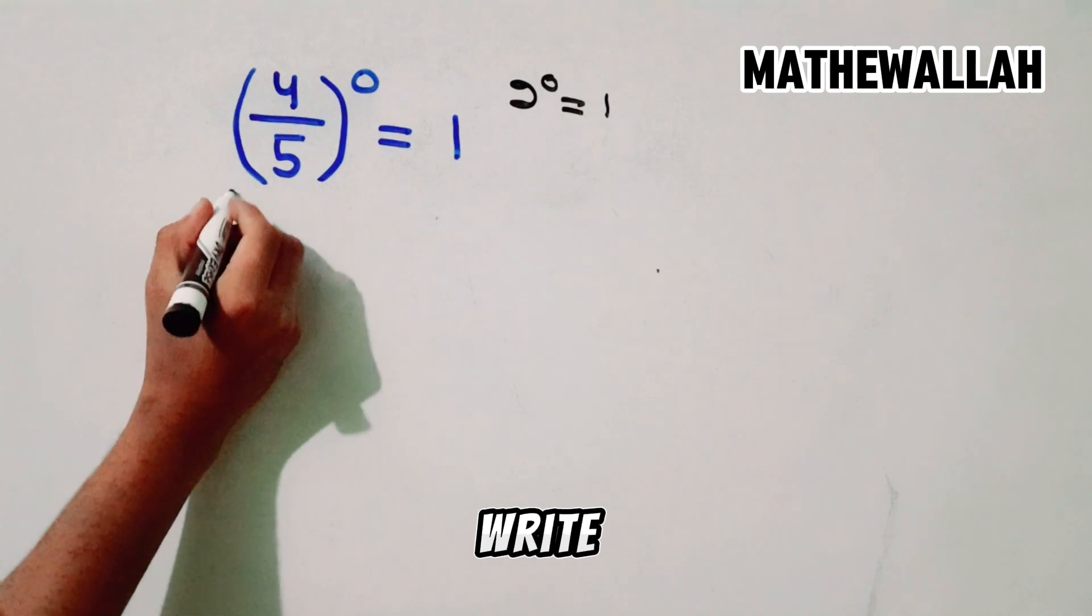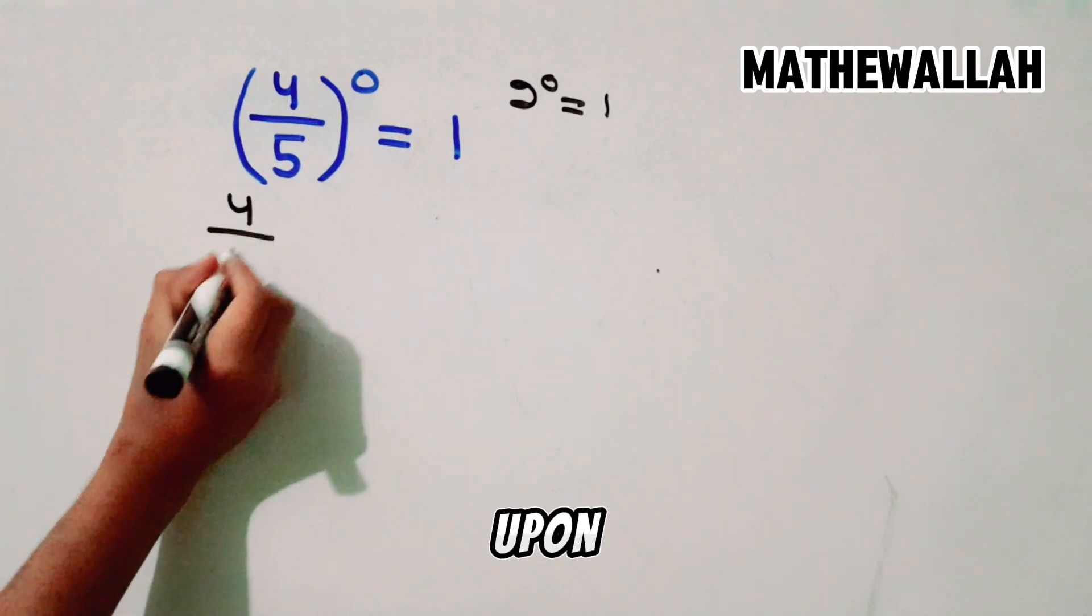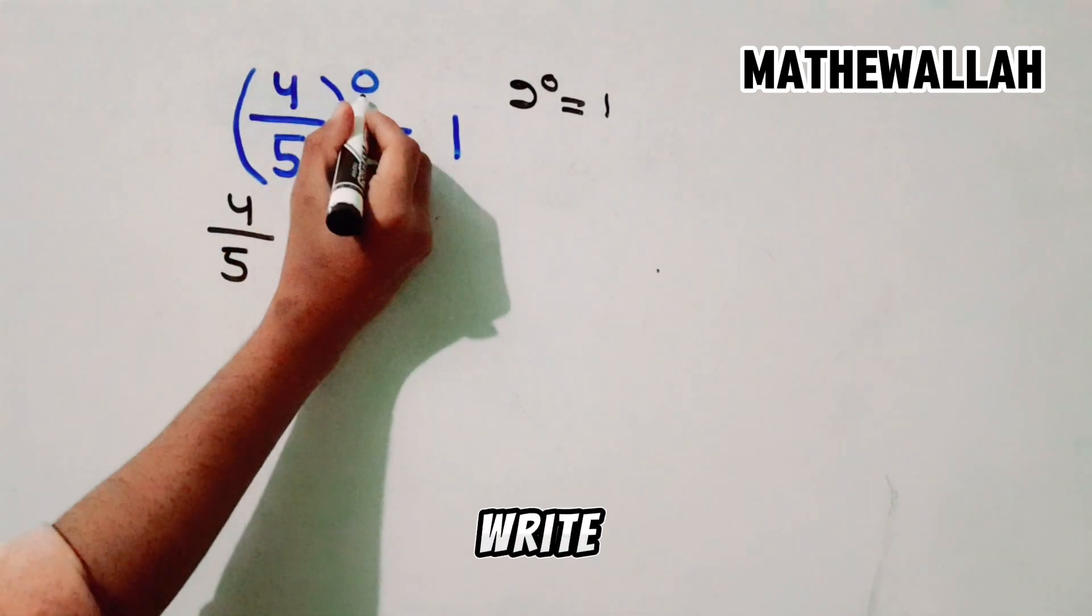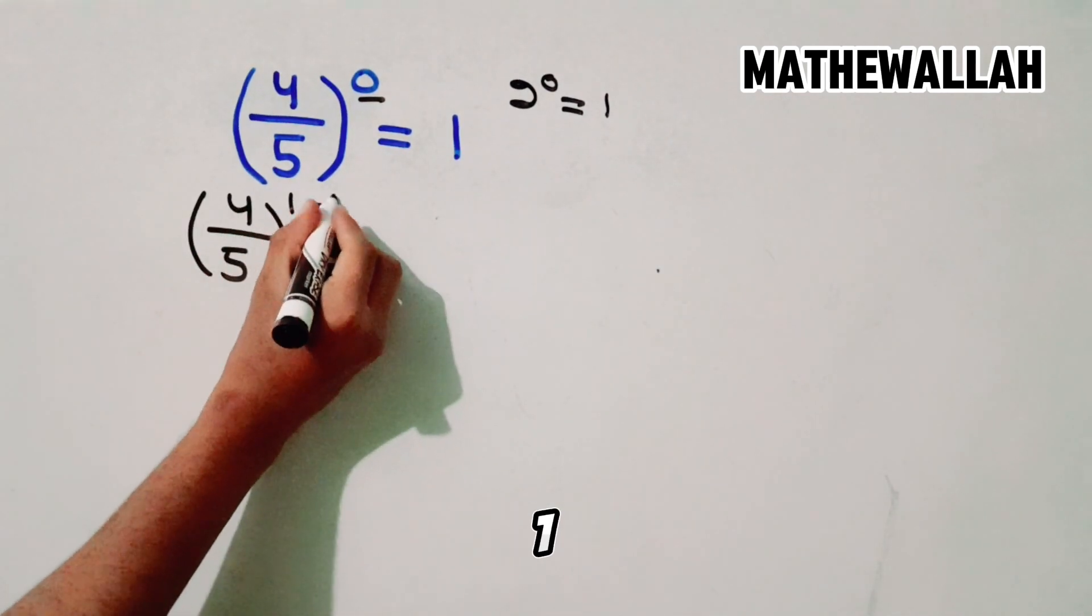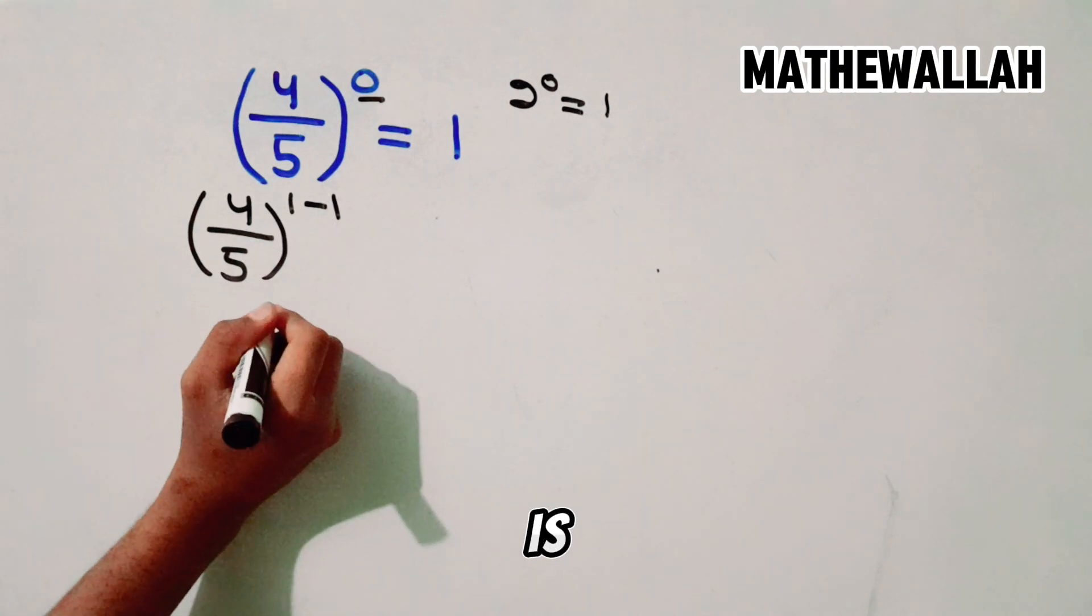So here we write this as 4 upon 5. We write 0 as 1 minus 1. Okay, we write this as this.